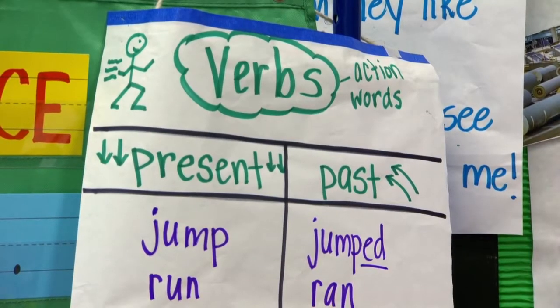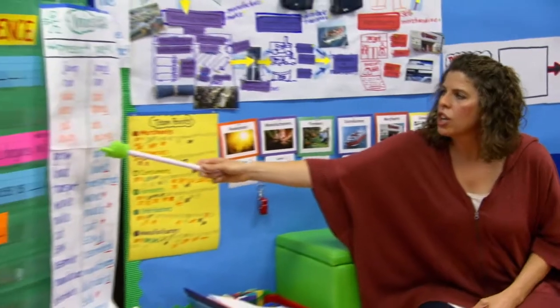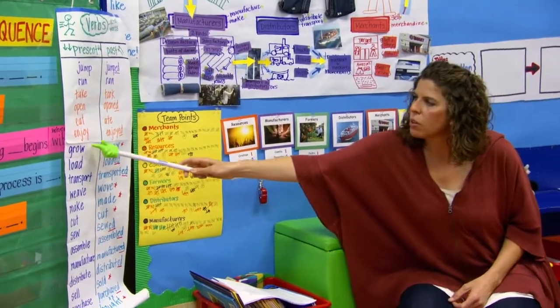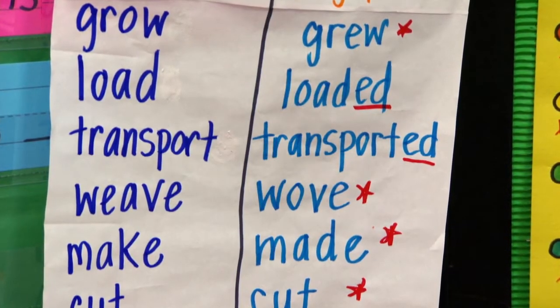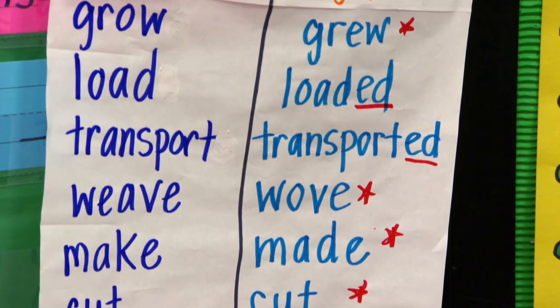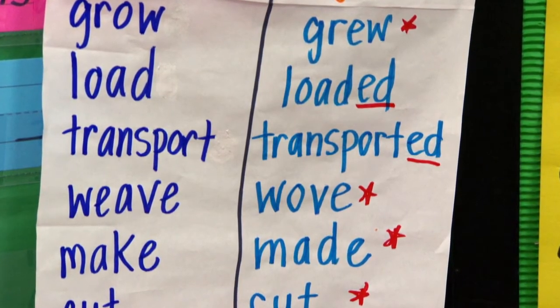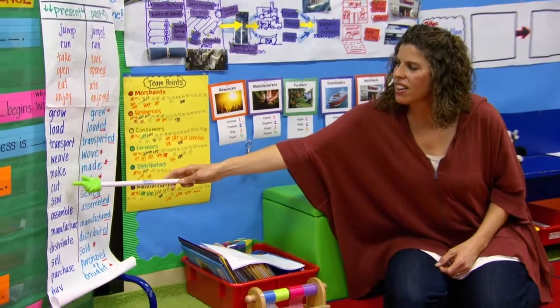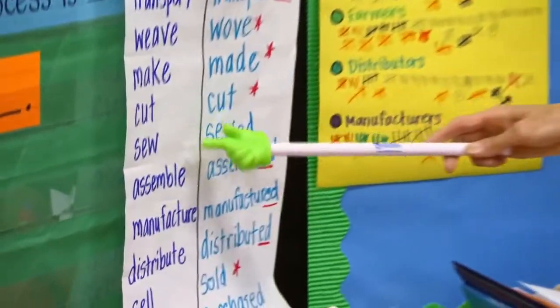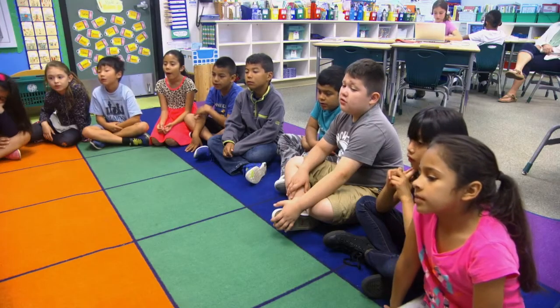But we're going to need a really important part of speech to help us do that. What part of speech are we going to need to tell about all the action that happens? We're going to need our verbs to tell that story. And I was wondering if I could have you read with me some of the verbs we think we'll need: grow, load, weave, make, cut, assemble, manufacture, distributor.